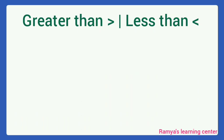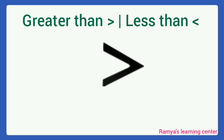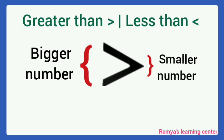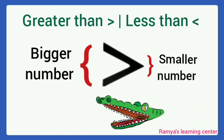Next, greater than and less than. This is the symbol. The open side always points towards the bigger number, and the closed side always points towards the smaller number. We can learn this concept easily by using an alligator. The alligator mouth will always open towards the bigger number.